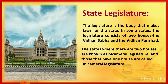Today we are going to see how state government functions. State Legislature is the body that makes laws for the state. In some states, the legislature consists of two houses — Vidhan Sabha and Vidhan Parishad, that is, Legislative Assembly and Legislative Council. States where there are two houses are called bicameral legislature, and those that have one house are called unicameral legislature.